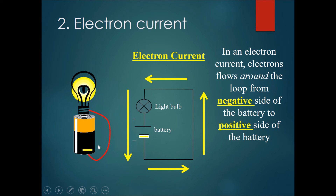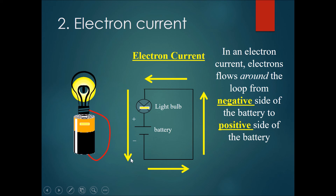Let's take a look at what really happens. The electrons are gathered at the negative side of the battery and they flow up, through the light bulb, and back to the positive side. Similarly, in the diagram, electrons start from the negative side of the battery, flow one round through the light bulb, and back to the positive side. The electron current is the true state of things.